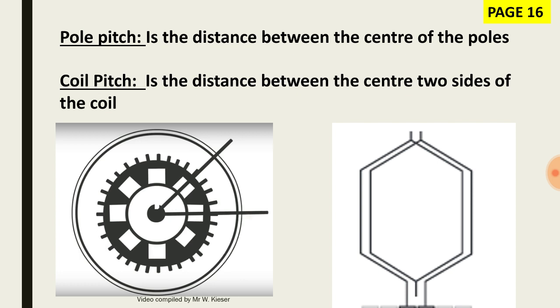The difference between pole pitch and coil pitch: pole pitch is the distance between the centers of the main poles, whereas coil pitch is the distance between the sides of the coils.